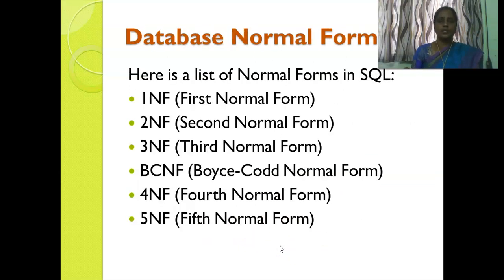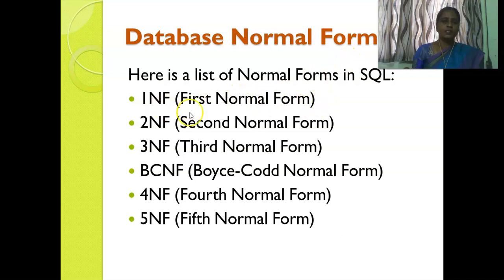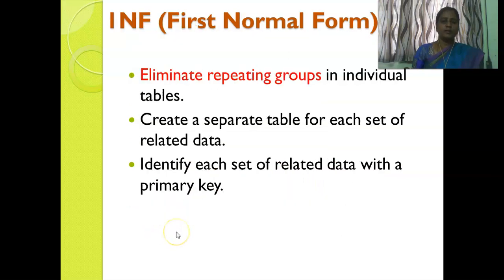Normalization is the process of organizing data and reducing insert, update, and delete anomalies in a database. The normal forms in SQL are: first normal form, second normal form, third normal form, BCNF (that is Boyce-Codd normal form), fourth normal form, and fifth normal form.